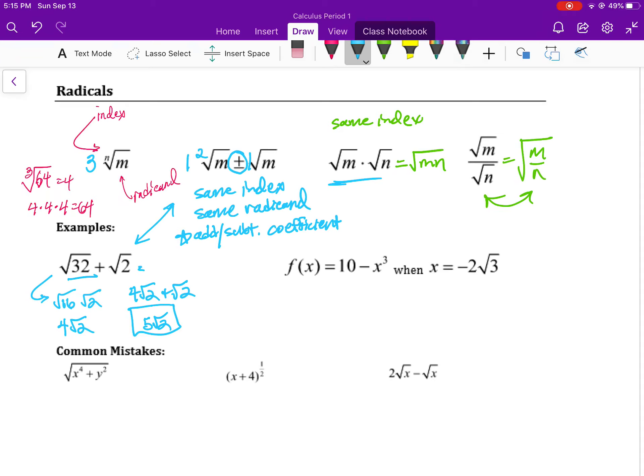Here we have a problem in function notation. We're given a function and then we're being told what x is equal to. So we're being asked to solve f of negative 2 root 3. That's going to be equal to 10 minus negative 2 root 3 cubed. Notice that I put x in parentheses. That's a very good practice to keep in order to avoid making order of operations mistakes or positive and negative sign mistakes.